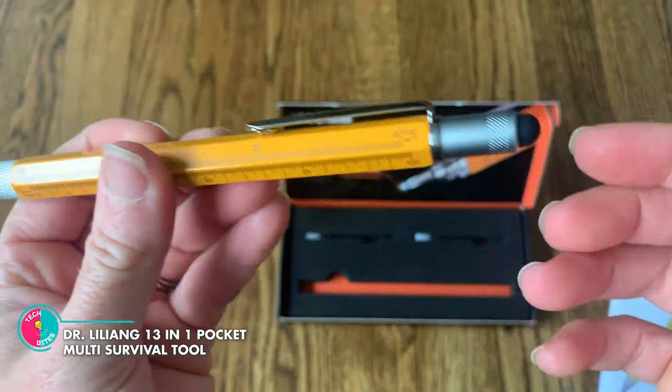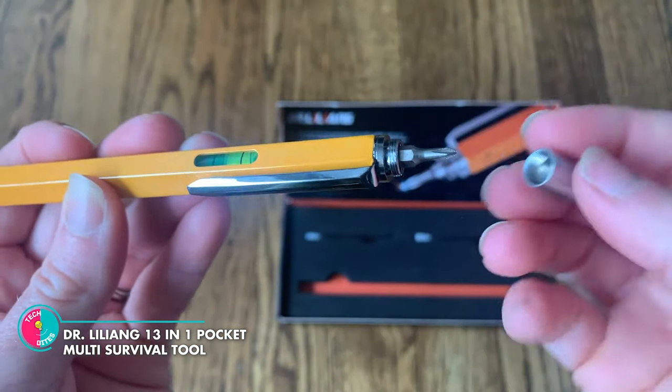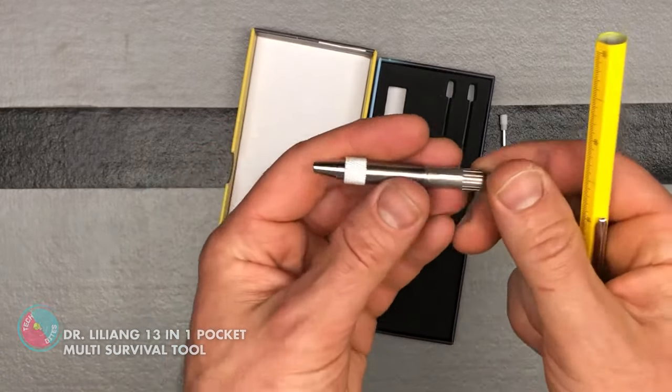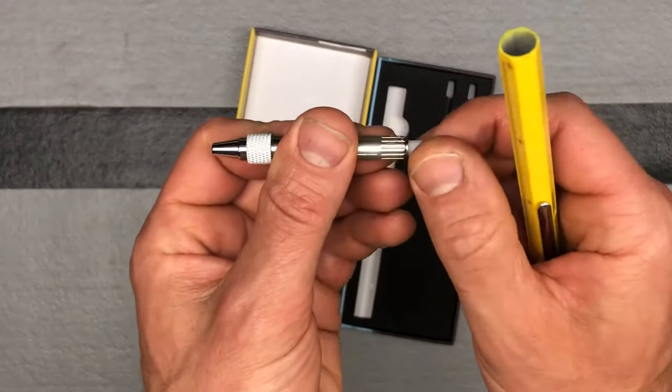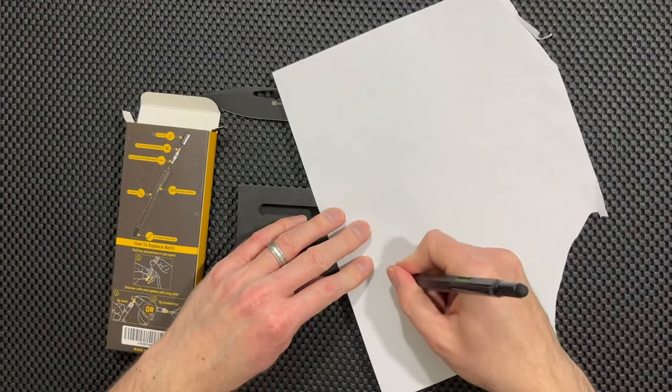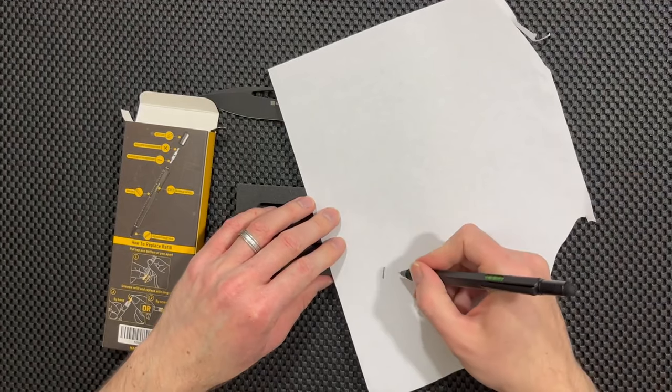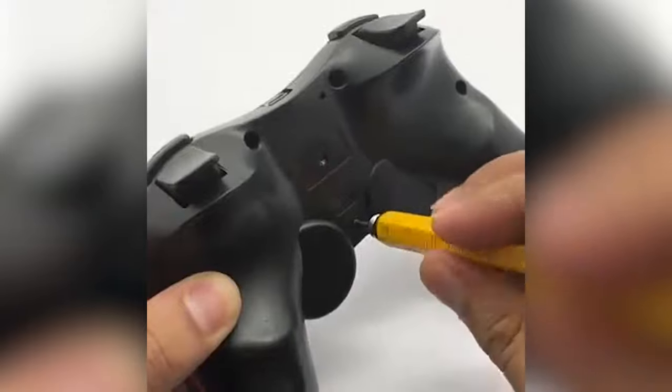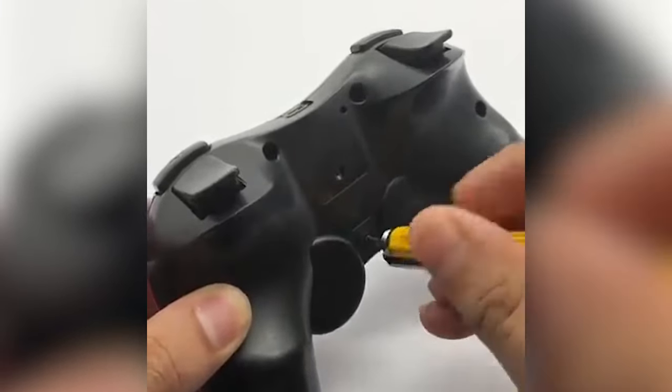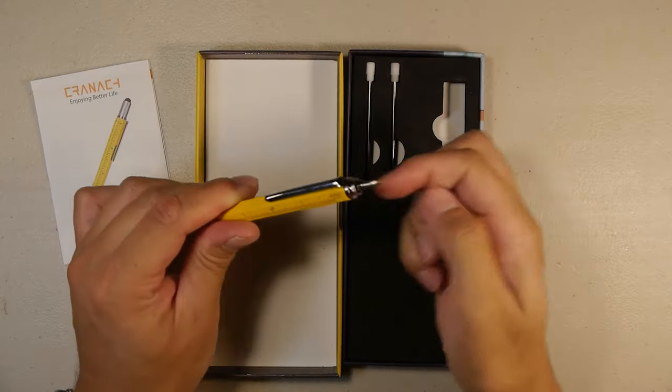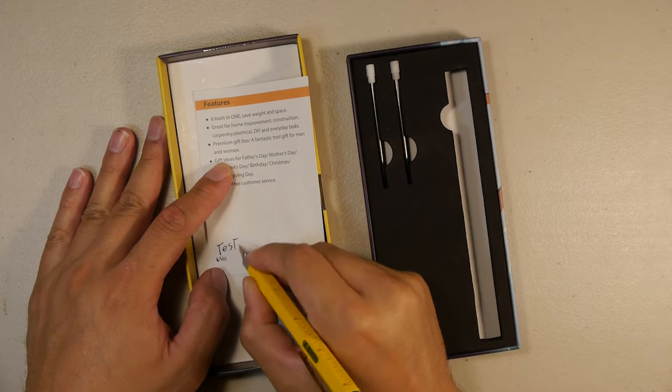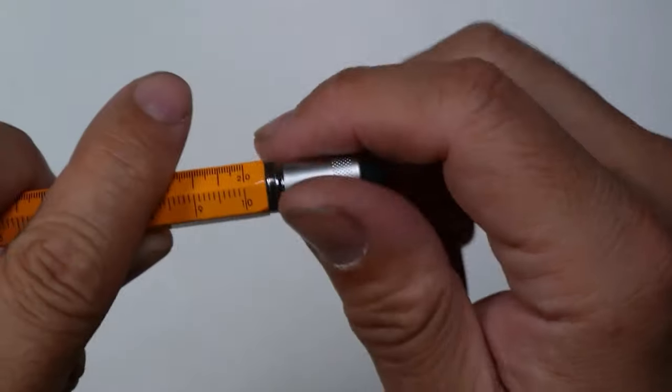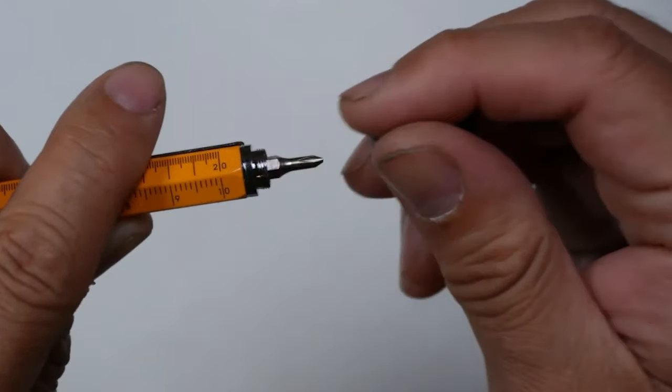Dr. Liliang 13-in-1 Pocket Multi-Survival Tool. It has six handy functions built right in, from the level meter to the cross and flat blade screwdrivers. This multi-tool pen has all the tools you need to tackle any job, big or small. And with a scale that includes four different scales, you'll be able to measure anything with precision and accuracy. But that's not all. This multi-tool pen also includes a mobile phone touchscreen and a ballpoint pen, making it the perfect addition to your everyday carry.